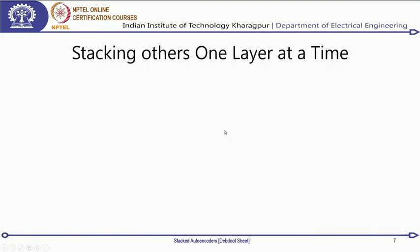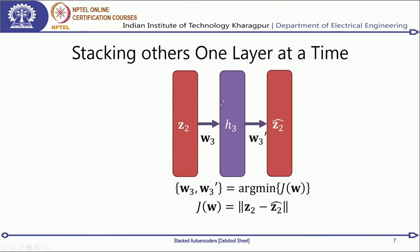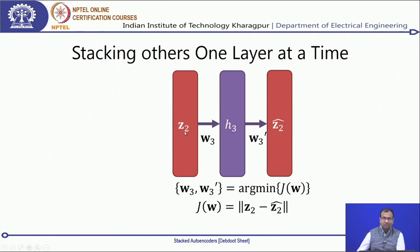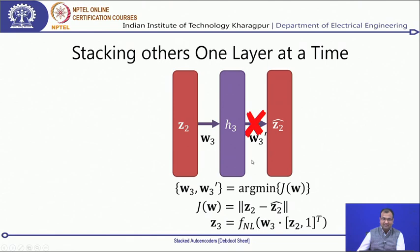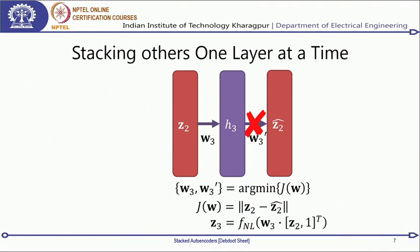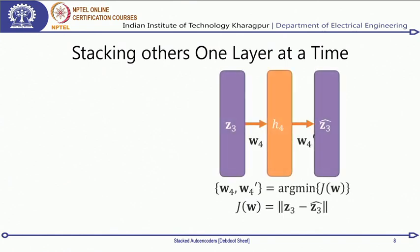Now I can stack another layer on top: a third hidden layer h3, whose input is z2 and which predicts z2-hat. The same learning algorithm applies until z2-hat is perfectly reconstructed. Then I chop off w3-prime, which connects h3 to z2-dashed, and get a latent space called z3. By this point, each input patch x has been represented as z1, then z2, then z3, in successive transform domain representations, and I can continue adding more layers in the same way.